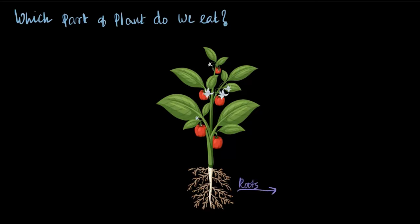Starting from the roots, we eat carrot, radish, and sweet potato, for example. Carrot is the root of a carrot plant, radish is the root of a radish plant, and sweet potato is again the root of a sweet potato plant.